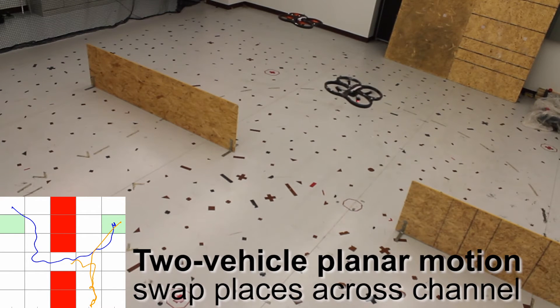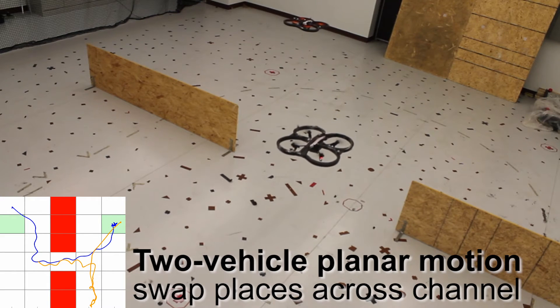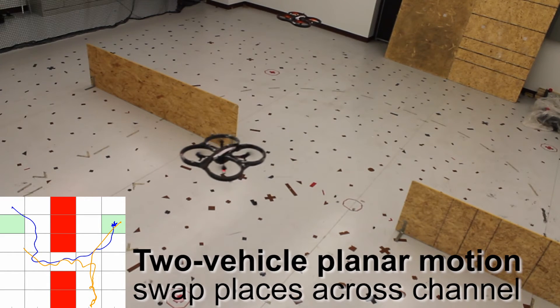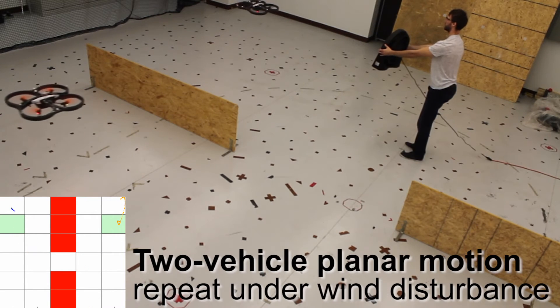In contrast to the single vehicle run shown previously, the two vehicles shown here experience mutual aerodynamic effects. Nevertheless, the feedback based motion primitives are able to execute the high level strategy.